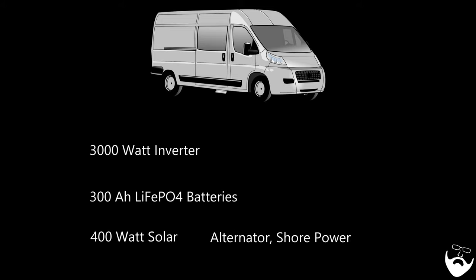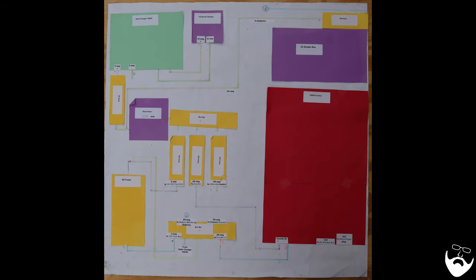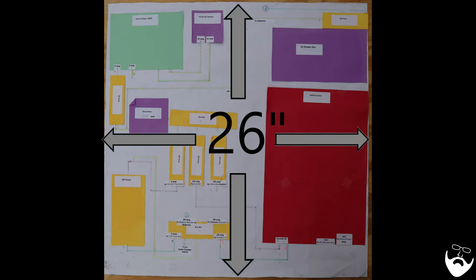This video focuses mainly on the electrical panel. After sketching out a rough electrical schematic on paper, I looked up the size of each component and cut a sheet of paper to actual size. The room in the van dedicated to the electrical panel is a 26 by 26 inch space.